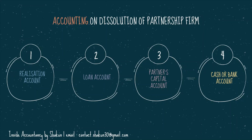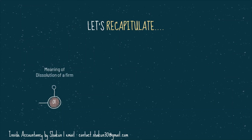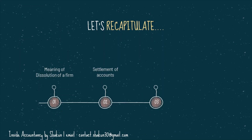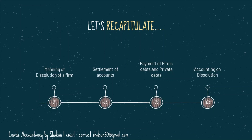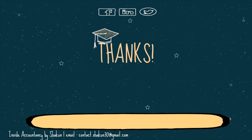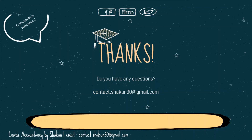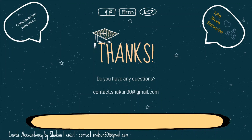So these are the four accounts to prepare at the time of dissolution: realization account, partner's loan account, partner's capital account, and cash or bank account. In this video we talked about the meaning of dissolution of a firm, settlement of accounts in terms of treatment of losses and application of assets, firm's debt and private debts, and the accounting at the time of dissolution. Thank you for listening. If you like the content or have any questions, you can email me or put your comments. Please like, share and subscribe to this channel. This is Inside Accountancy by Shakun signing off.